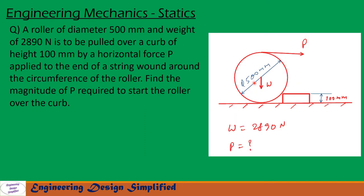Today's problem is: a roller of diameter 500 millimeter and weight of 2890 newton is pulled over a curve of height 100 millimeter by a horizontal force P applied to the end of a string wound around the circumference of the roller. Find the magnitude of P required to start the roller over the curve.